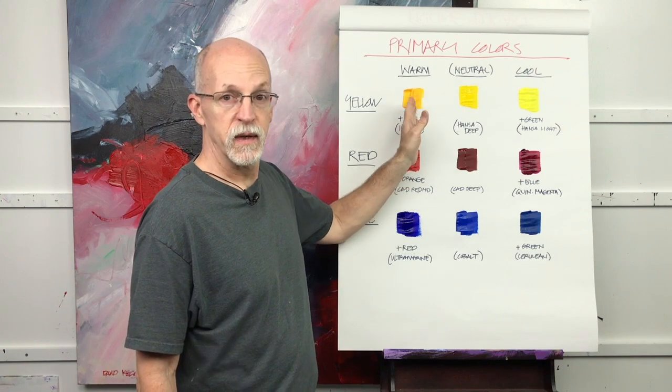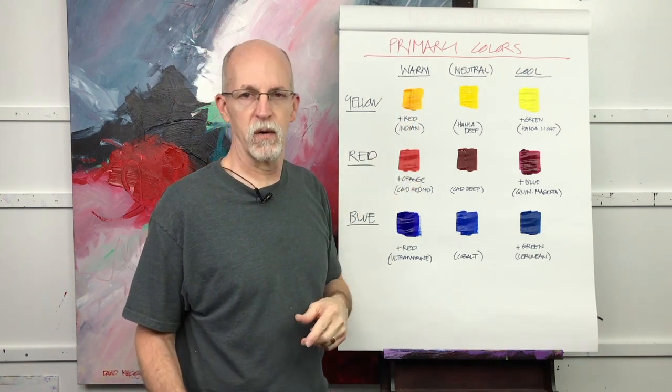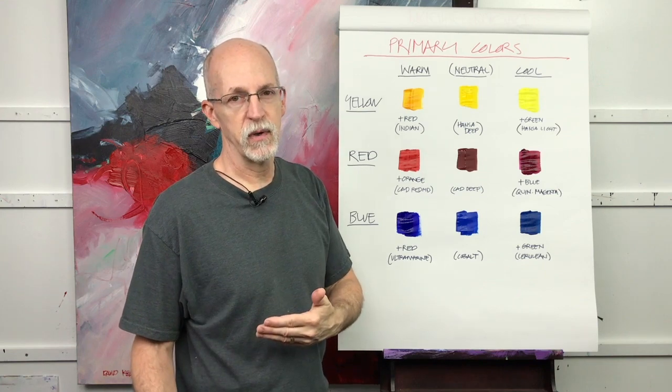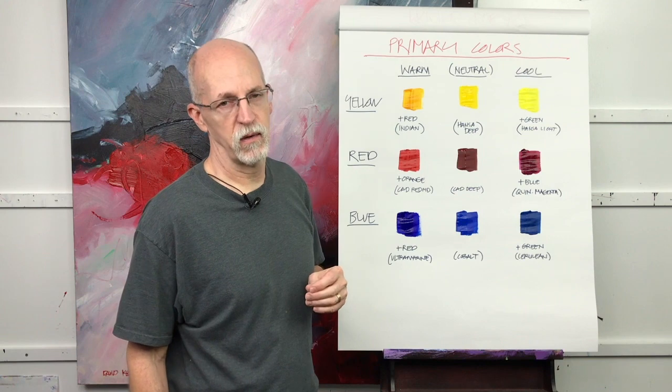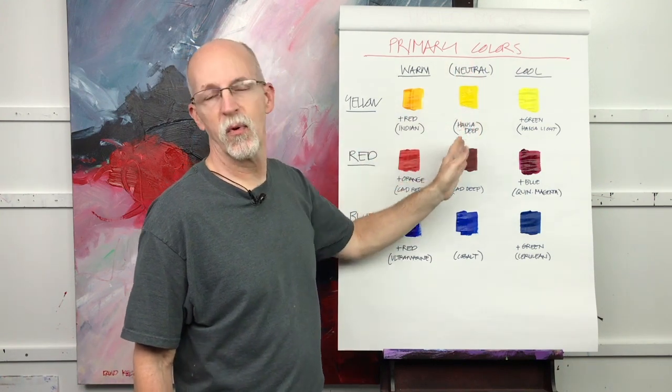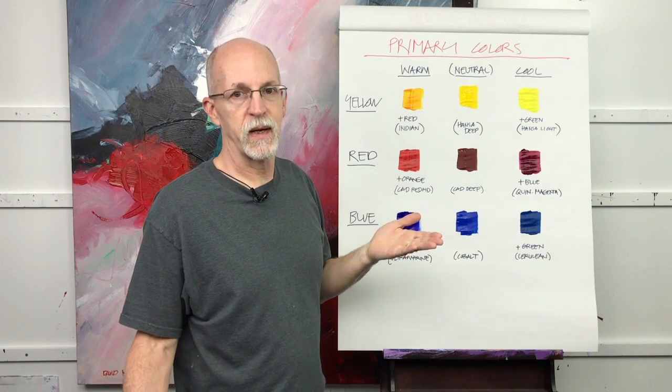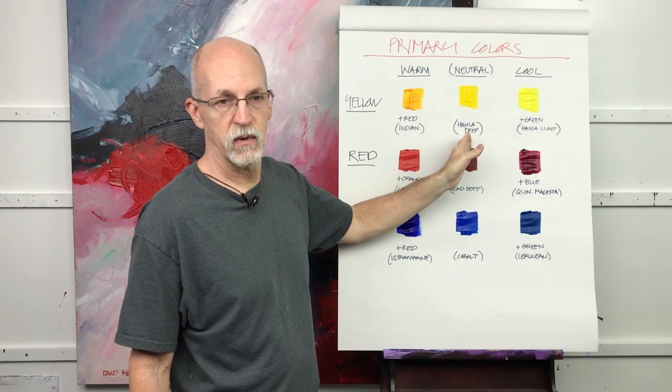For the warm, you can see how warm this is. It's got a lot of red in it, so warm yellow has red added to it to take it closer to orange than a cool yellow. The neutral, this would be called primary yellow, and a lot of manufacturers make a pure primary yellow. This for me is Hansa deep.